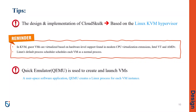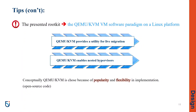Hello, this is Soheila, and I wanted to talk about the design and implementation of CloudSkulk. It is based on the Linux kernel-based virtual machine hypervisor, KVM. KVM has a Type-1 hypervisor, and guest VMs are virtualized based on hardware-level support found in modern CPU virtualization extensions. Every VM is implemented as a regular Linux process and scheduled by the standard Linux scheduler. To create and launch a VM, typically a user-level tool called QEMU is used. The presented rootkit was performed on a Linux platform hosting the QEMU KVM software, which enables nested hypervisors and is used for live migration, and is popular and flexible in its implementation.